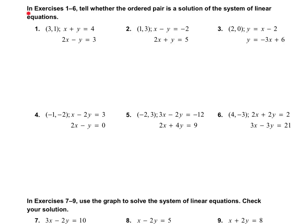On page 135, in exercises 1 through 6, tell whether the ordered pair is a solution of the system of linear equations. So we're given a point, and we're given the set of linear equations. We have two lines here, and we need to try and decide, does this point work? Is that the solution for this set? So the answer is going to be yes or no.